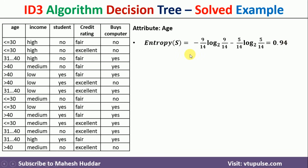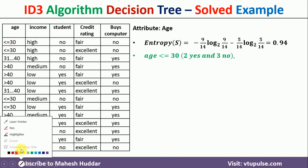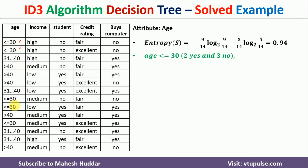Next, we find the possible values for age: less than or equal to 30, in the range 31 to 40, and greater than 40. For age less than or equal to 30, there are 5 examples — 2 yes and 3 no. For age in the range 31 to 40, there are 4 examples — all 4 are yes, and 0 no.